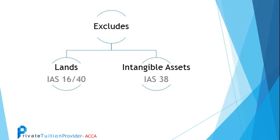What is excluded from IAS 41? Land and buildings fall under the criteria of IAS 16 and IAS 40. Intangible assets fall under the criteria of IAS 38.